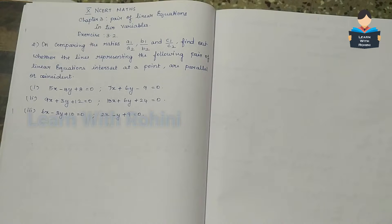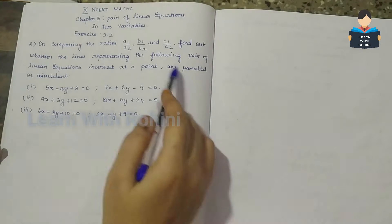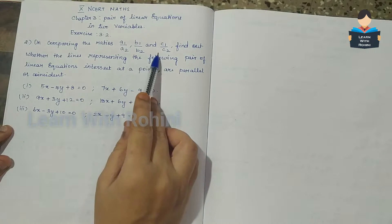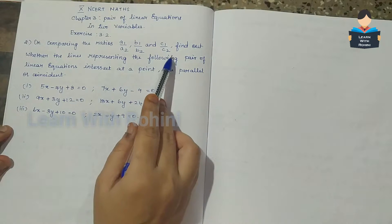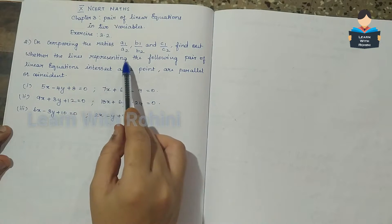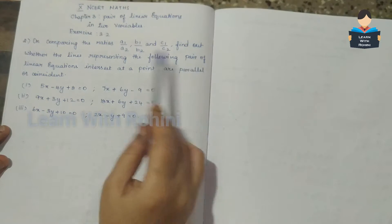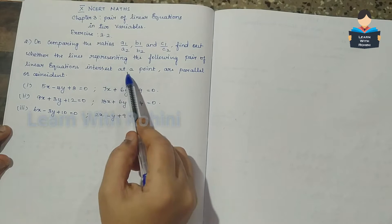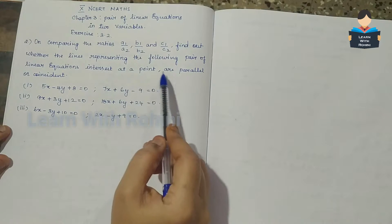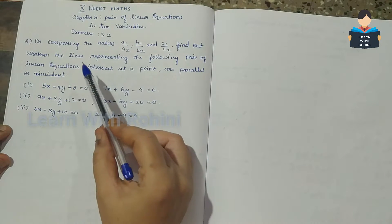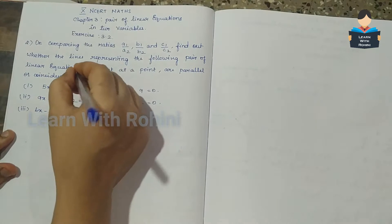On comparing the ratios a1 by a2, b1 by b2, and c1 by c2, we find out whether the lines representing the following pair of linear equations intersect at a point, are parallel, or are coincident.